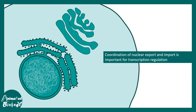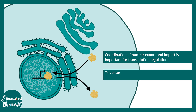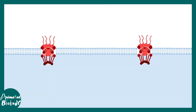Nuclear localization signals, nuclear export, and import literally govern how much time a transcription factor or a repair protein stays inside the nucleus. If a particular factor stays for a long time in the nucleus, it may regulate transcription for a long time. But if it is exported out, the duration of transcription can be modulated. This is one important type of regulation.